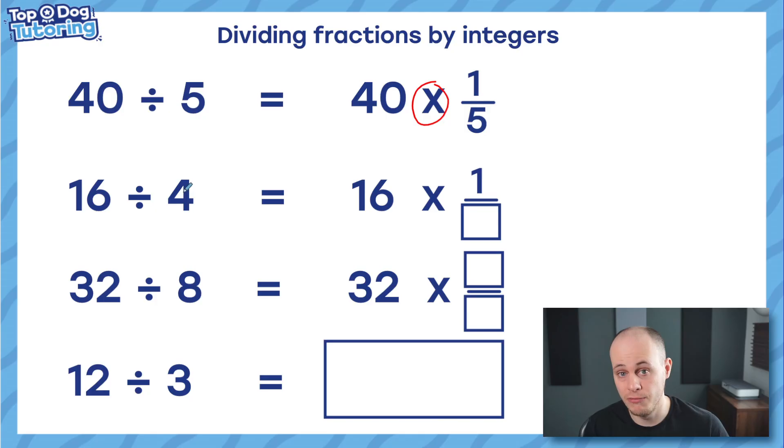Help me out here, guys. 16 divided by 4 is going to be the same as 16 multiplied by a quarter. That number just gets flipped into a fraction. Can you do the last two? If you need to pause the video, you can, but I'm going to go through them. 32 divided by 8 is the same as 32 multiplied by 1 eighth. Flip my number into a fraction. And the final one, completely blank. Can we solve it? Can we write the same thing? 12 divided by 3 is the same as 12. I'm going to multiply. So I'm going to change my operation into multiply, and I'm going to flip my number into a fraction by putting one above it. It's the same as 12 times a third.